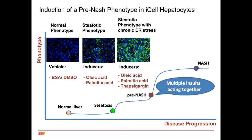In terms of cell phenotype detection, we use a 2D high-content imaging platform, showing nuclei in blue with Hoechst dye and lipid content using a BODIPY green dye. Vehicle treatment with BSA-DMSO gives the normal liver phenotype. The mixture of oleic acid and palmitic acid shows an increase in green color and lipid content — a fatty liver steatosis phenotype. Adding thapsigargan drives this further to a steatotic phenotype with chronic ER stress, which is more of a pre-NASH phenotype with multiple insults acting together.